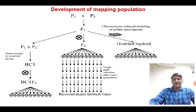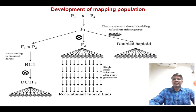Today, I will discuss about mapping of QTL or gene for desired traits, development of DNA-based markers and their application in marker-assisted breeding. I will also discuss about development of EMS mutagenized population in wheat and identification of mutants by TILLING.